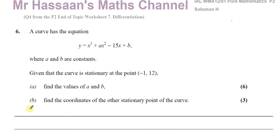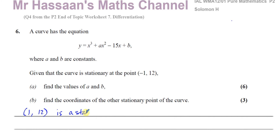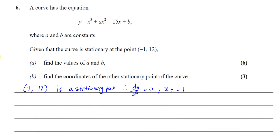So that means minus 1, 12 is a stationary point. A stationary point means the gradient is equal to 0. Therefore, dy/dx is equal to 0 at the point when x equals minus 1. When x equals minus 1, dy/dx equals 0. So I can use that fact to make an equation.